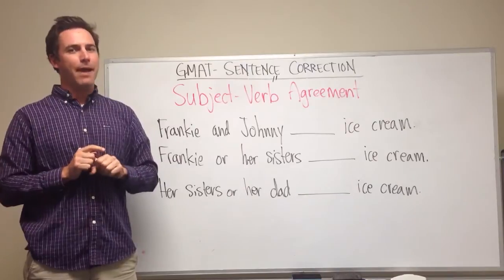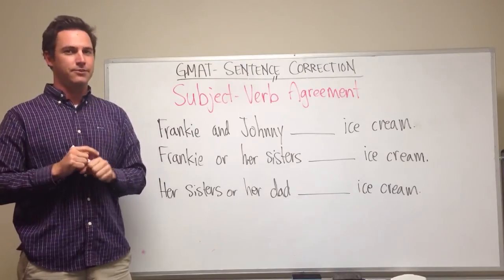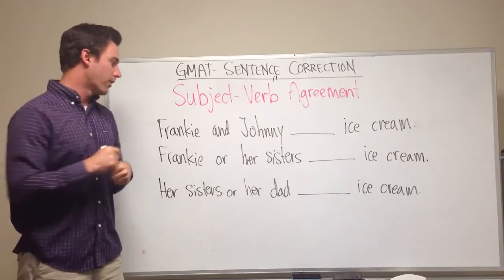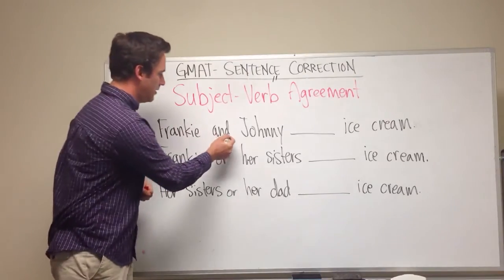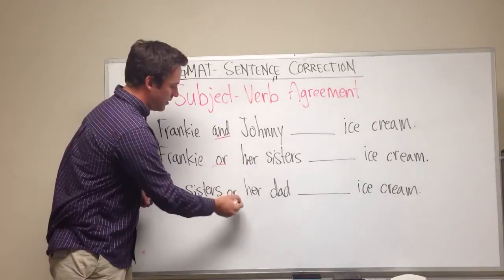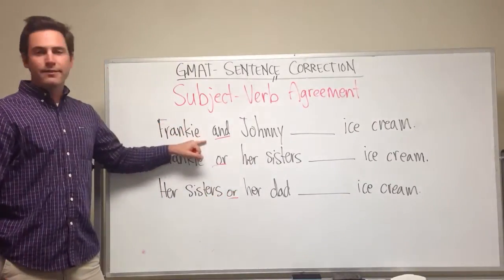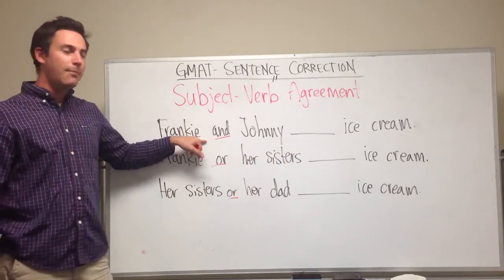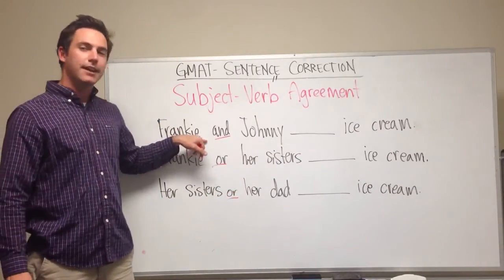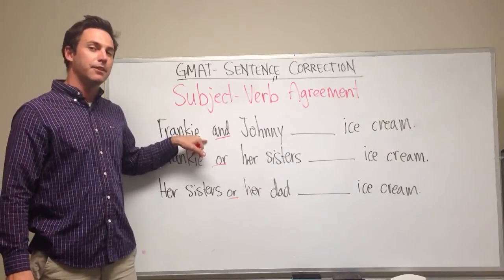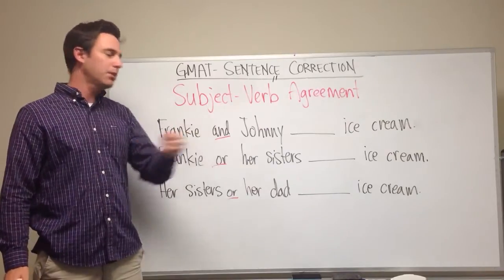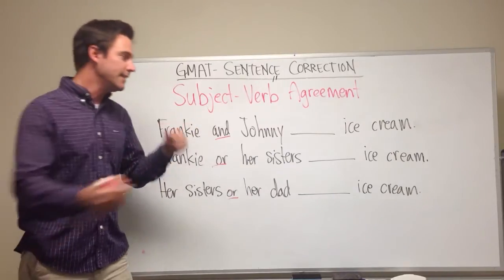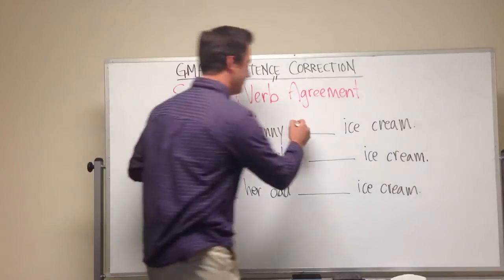That involves compound subjects when you're using AND or OR. When you have a sentence using AND, you create a compound subject, and that leads to a plural verb. So: Frankie and Johnny eat ice cream.